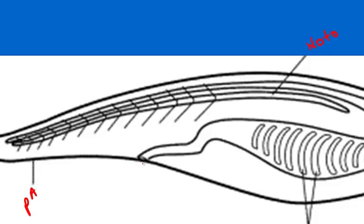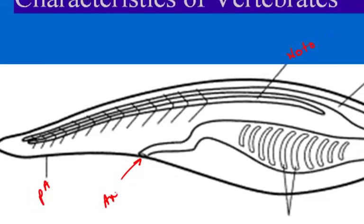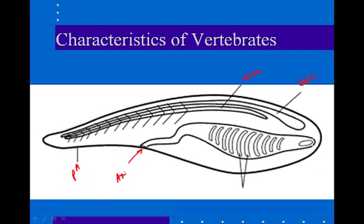We also have the post-anal tail. Here's the anus, and that tail occurs after the anus. This is different from a lot of the other animals with tails that we've seen, because in many of those animals, digestive organs run through the back and the anus is at the end of the tail. That doesn't occur in chordates.